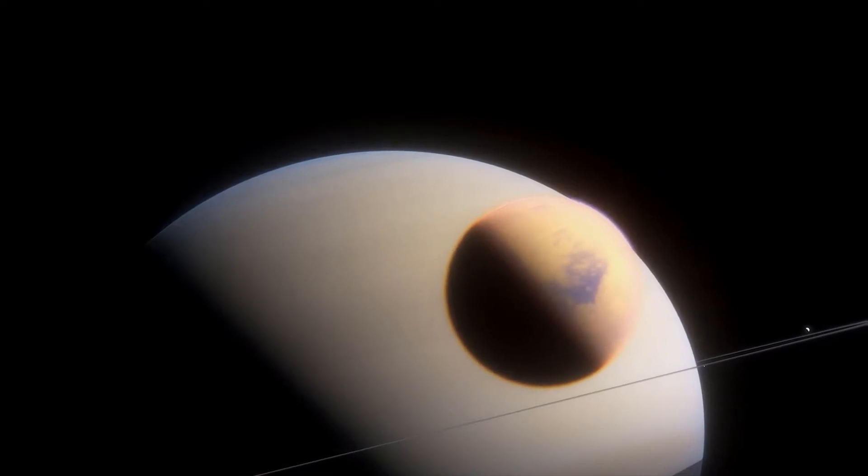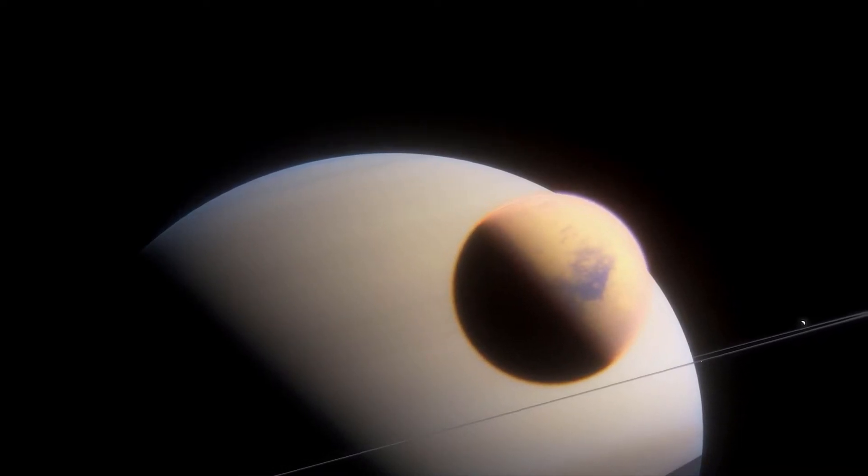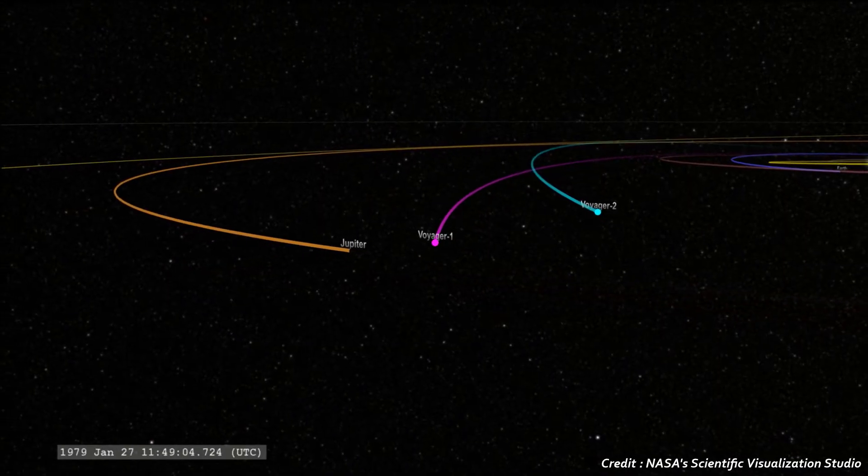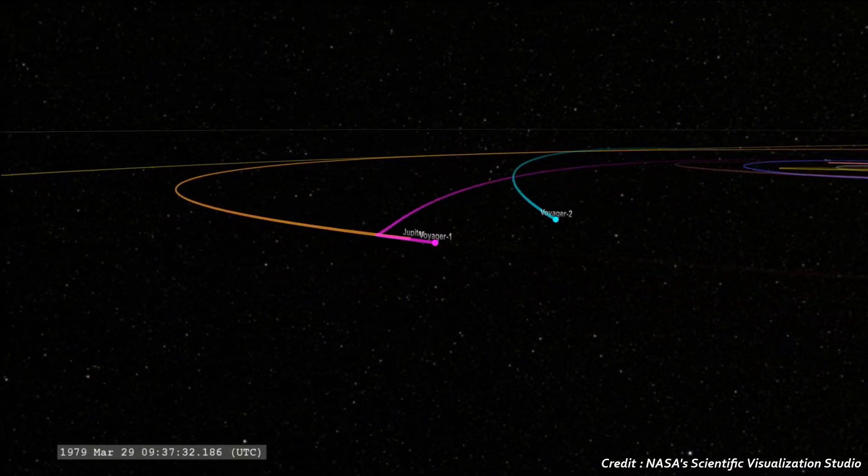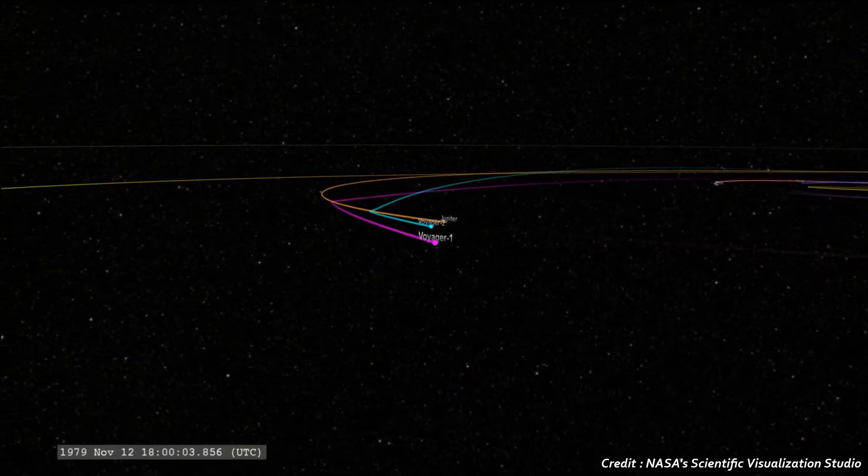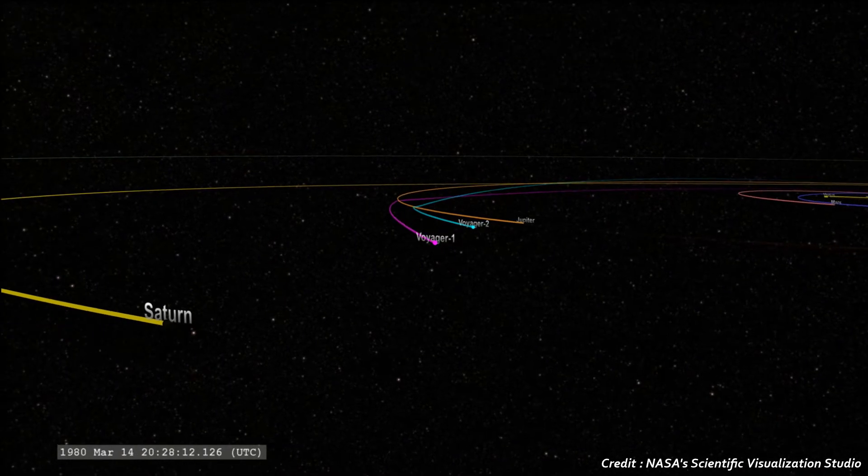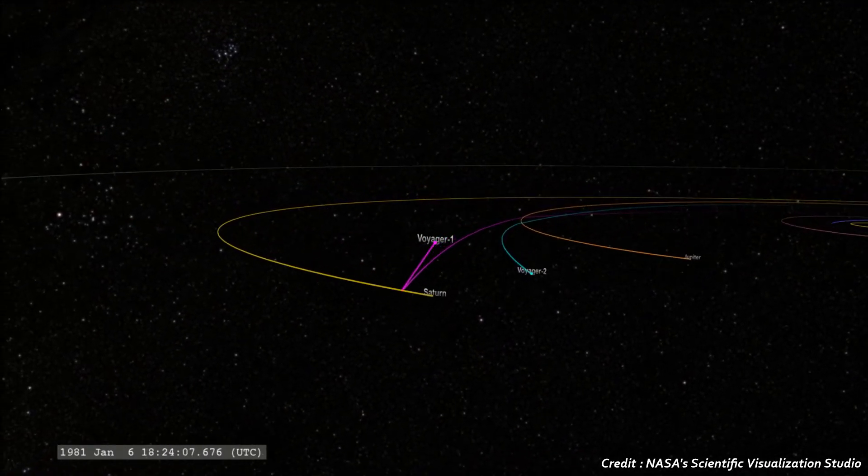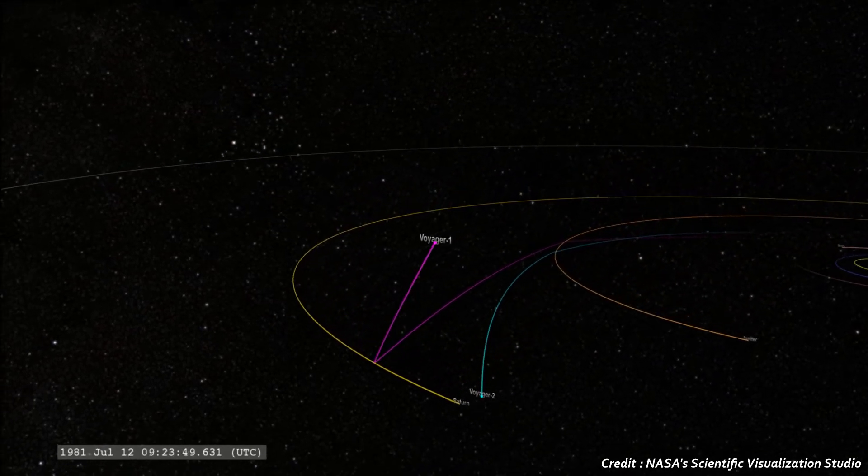The probe's main objective was to conduct close-up studies of the outer planets, including their large moons. Voyager 1 was launched on a faster, more direct path that would send the spacecraft hurtling towards Jupiter and Saturn. While Voyager 2 would take a slightly different path, that would also take it past the two gas giants, but then on to Uranus and Neptune.